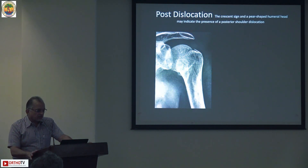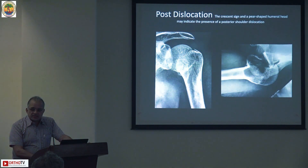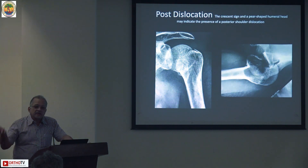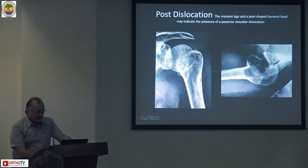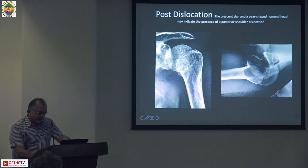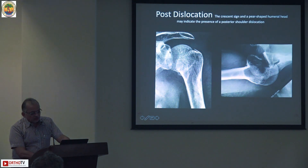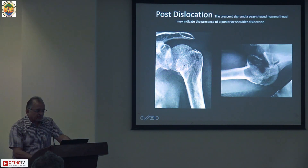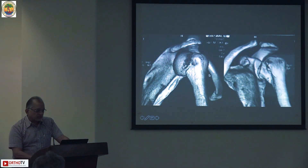Coming to posterior dislocation: these are often missed because we depend on an AP x-ray or the x-ray taken in casualty. Always look for a crescent sign or a pear-shaped head appearance, which should make you suspicious of a posterior dislocation. You can see the joint is not clearly visible and there is a pear-shaped head, which raises doubt. A lateral view will confirm the head is posterior, so CT scan here is equally important.